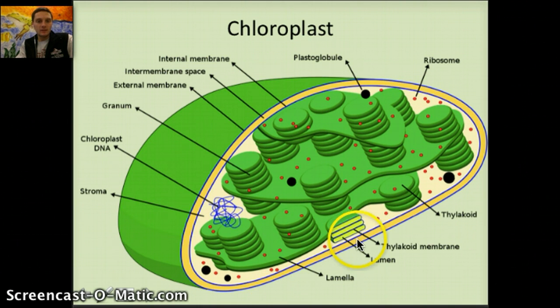We have these kind of little stacks, and they look almost like quarters stacked on top of each other. And these are called thylakoids. Each individual little stack here is an individual thylakoid, or each one of these little quarters is an individual thylakoid. And they can be stacked in a column like so, and we call that a granum. Thylakoids also have a membrane, and the inside portion within that thylakoid is a space called a lumen.